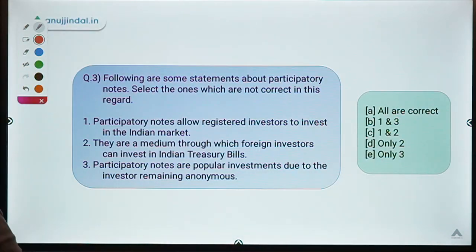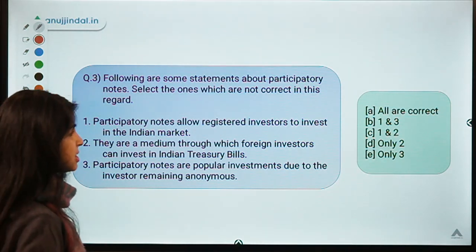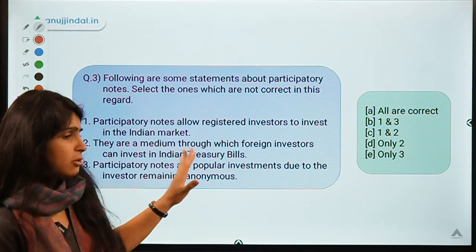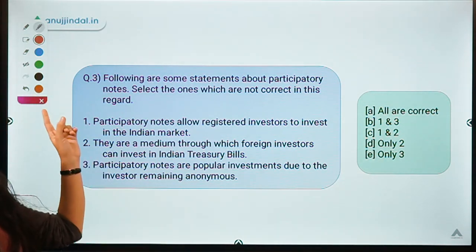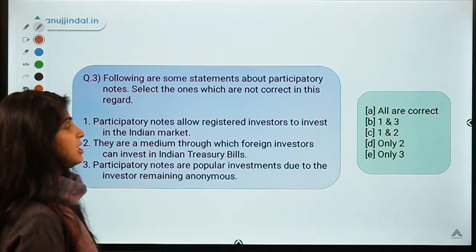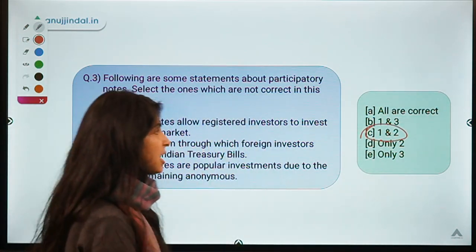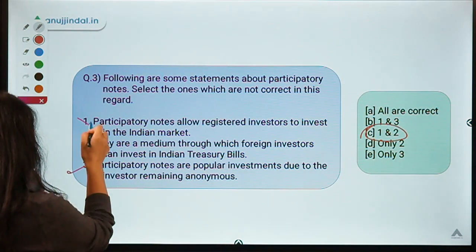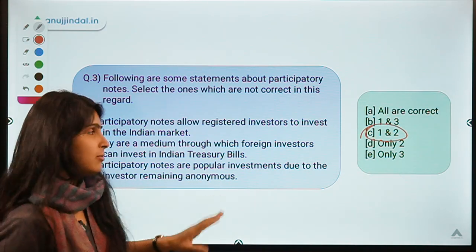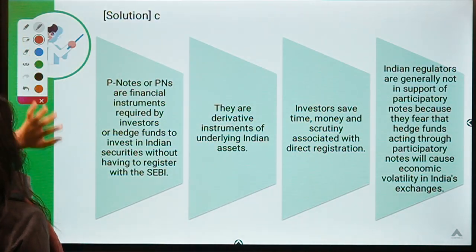Here is the third question for today. It says: following are some statements about participatory notes — select the ones which are not correct. There have been many doubts regarding participatory notes, so hopefully this clears them up. The correct option for this question is option C, meaning statements one and two are not correct, while statement three is correct.